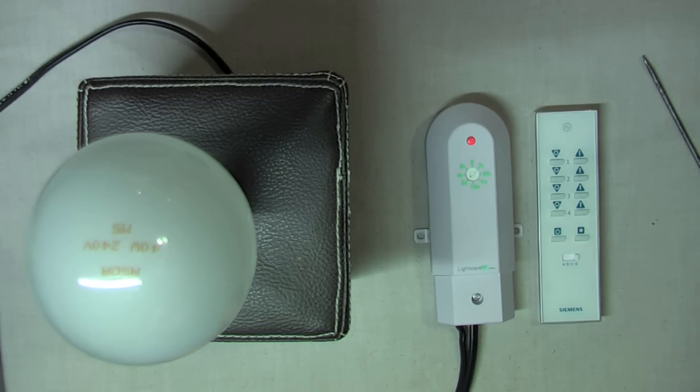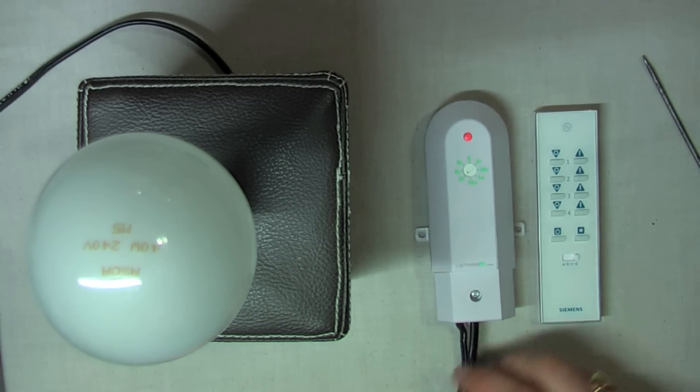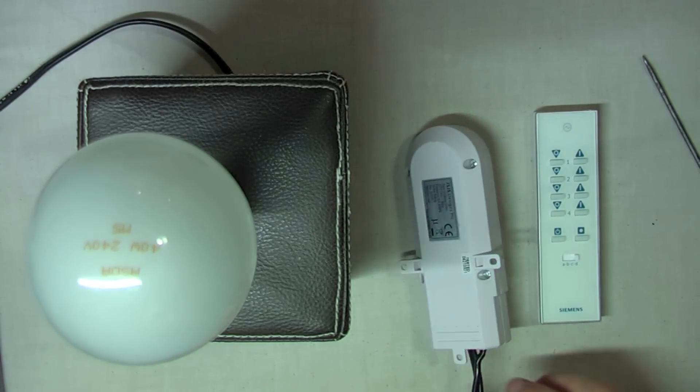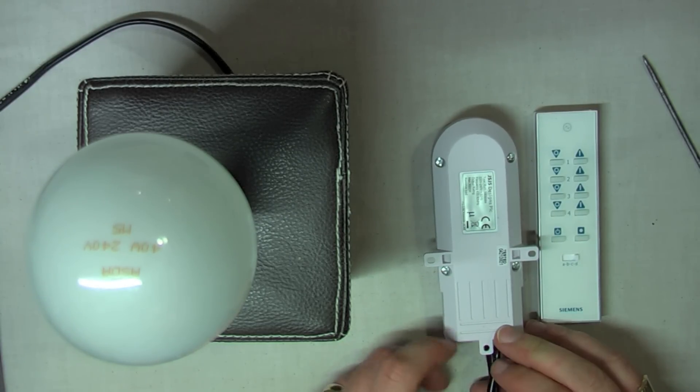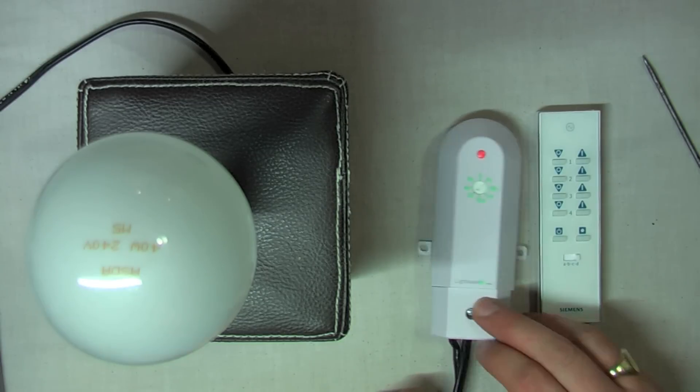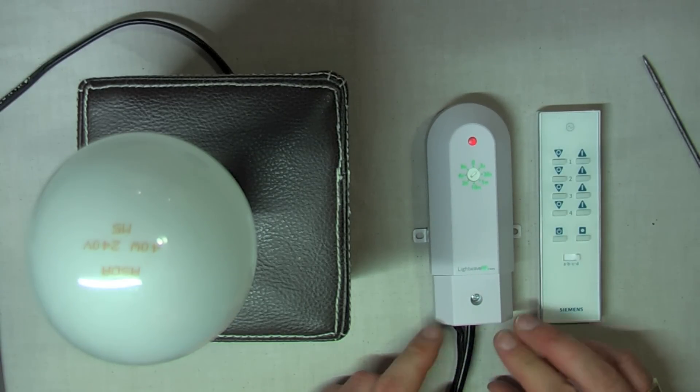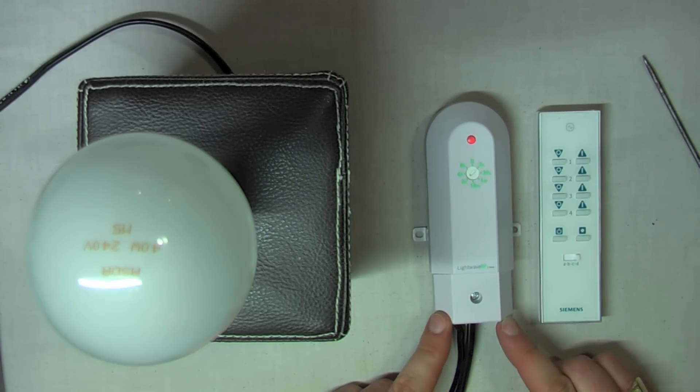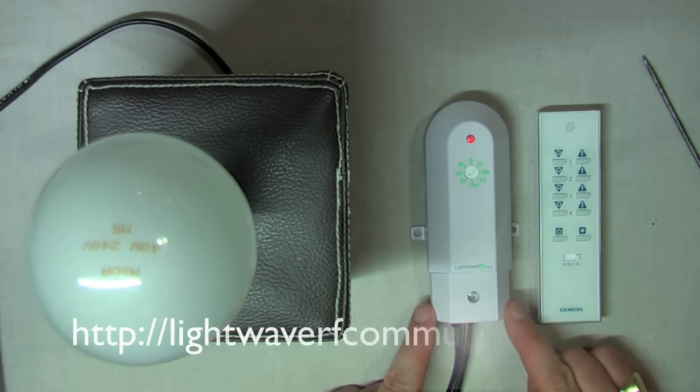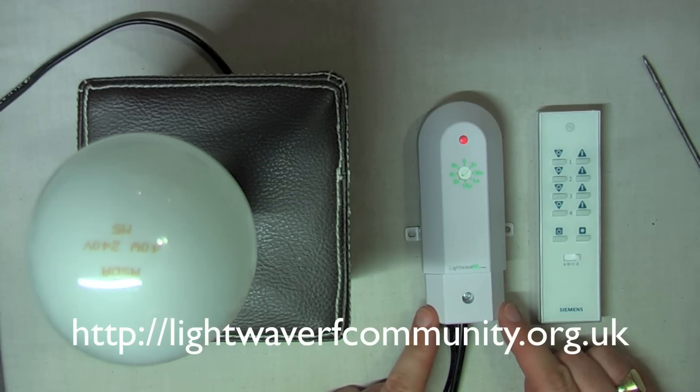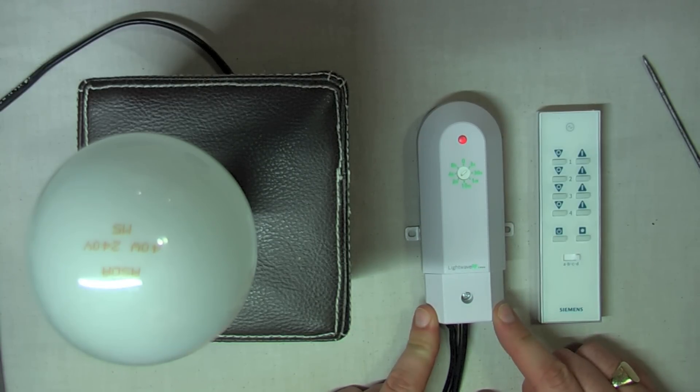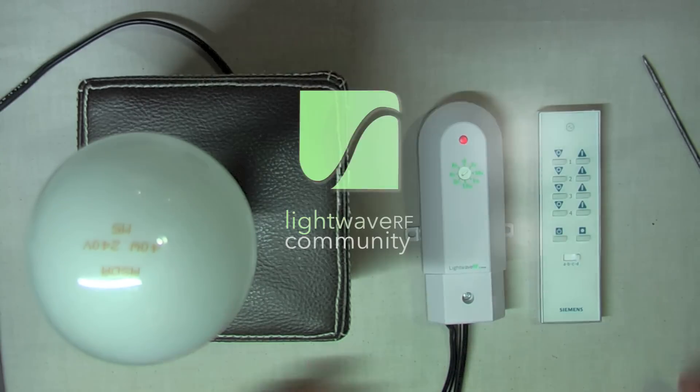So that's the LightWave RF inline relay, a three kilowatt model, part number JSJS LW830WH. Now, if you want to find the best price on this, or discuss the device in more detail, come along and see us at the lightwaverfcommunity.org.uk, and that address is on your screen now. And that's it for this video. Thanks for watching.